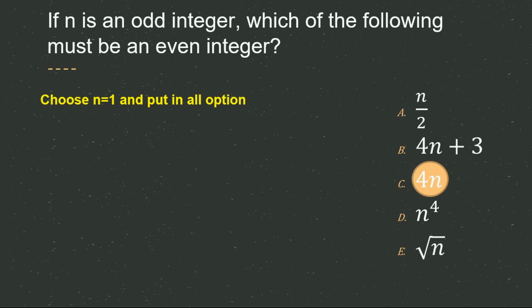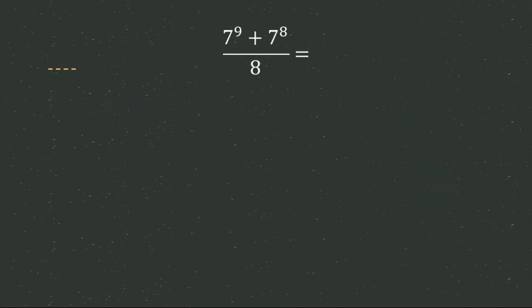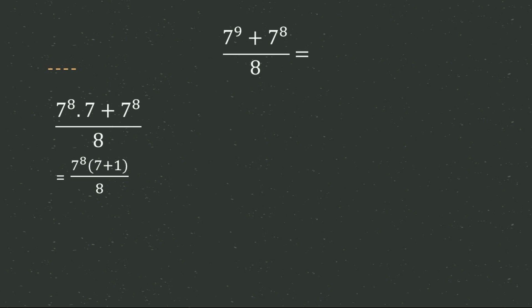The next question: (7⁹ + 7⁸) / 8 = what? You don't need a calculator. Write 7⁹ as 7⁸ × 7, so the numerator becomes 7⁸ × 7 + 7⁸. Factor out 7⁸ to get 7⁸(7 + 1) = 7⁸ × 8. Dividing by 8, the 8s cancel and you get 7⁸. So 7⁸ is the correct answer.